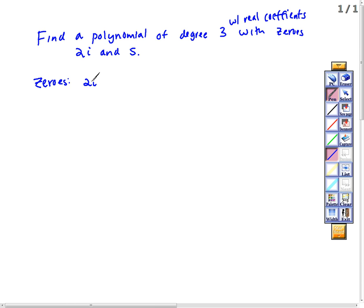If it's degree 3, how many zeros will we have? Three. And if it's over the complex numbers, that's okay, because 2i is obviously a complex number. If we include the complex numbers, we will have as many zeros as our degree.